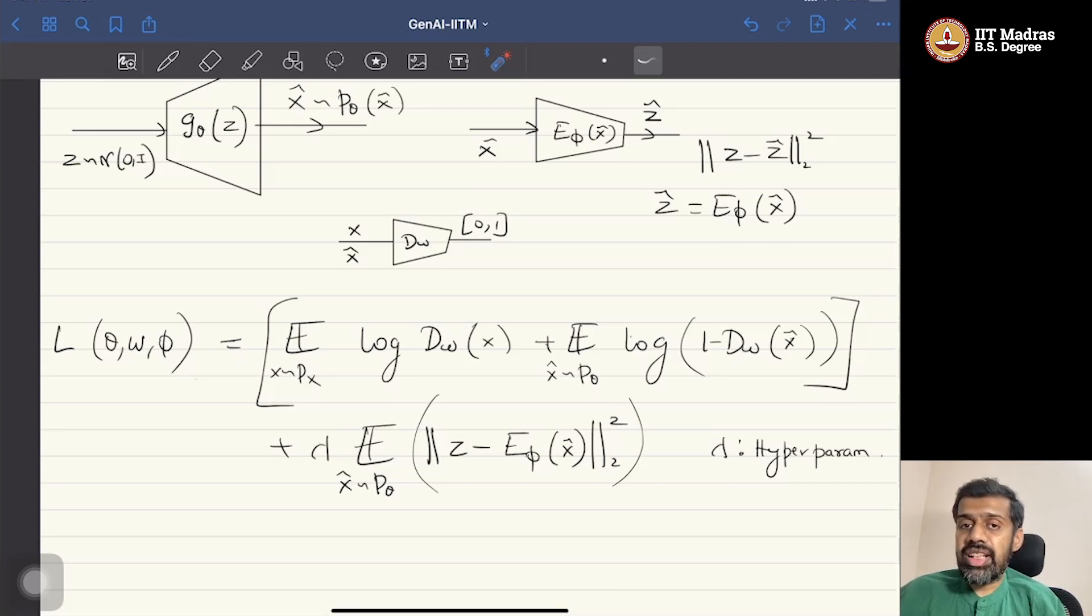But in the latent regressor, the discriminator of the GAN is not modified. GAN is trained just as the naive GAN, but there is an additional encoder network that is simply trying to regress upon the input latent vector.